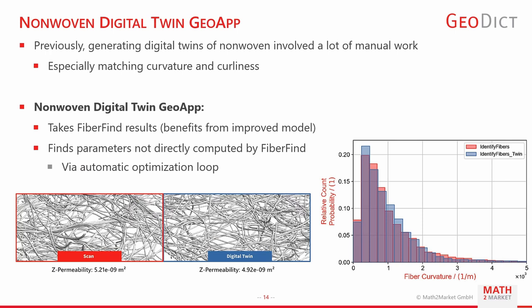Next we have the non-woven digital twin GeoApp by my colleague Andreas Grieser, who also has a presentation about it. Previously, generating a digital twin of a non-woven was a lot of manual work because it was difficult to match the curvature and curliness of the material sample. This GeoApp now allows you to take a segmented micro CT scan of a non-woven, run FiberFind on it, load the FiberFind results into the app, and via an automatic optimization loop, find all the missing parameters needed to input into FiberGeo to reproduce a statistical digital twin. The permeability and flow simulation results match quite well between the sample and the digital twin, and the fiber curvature distribution — previously tricky to reproduce — also matches.